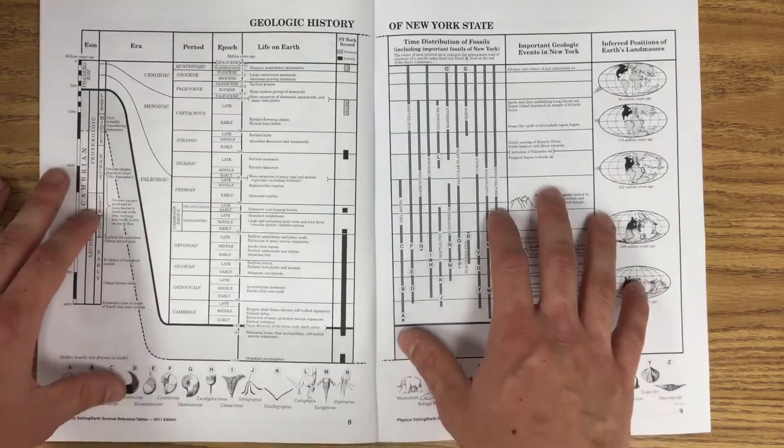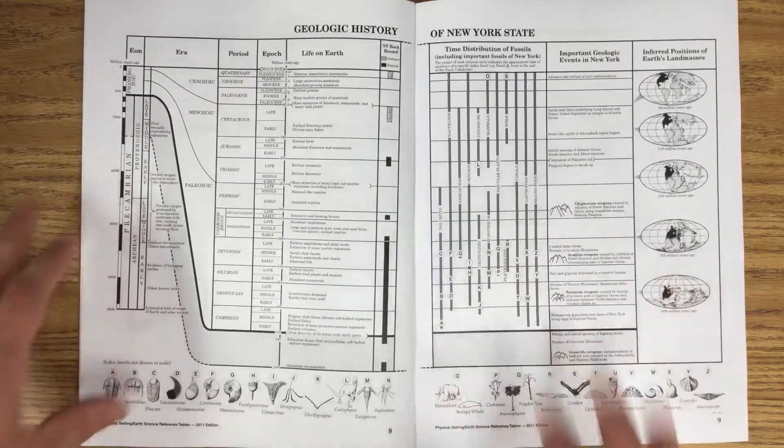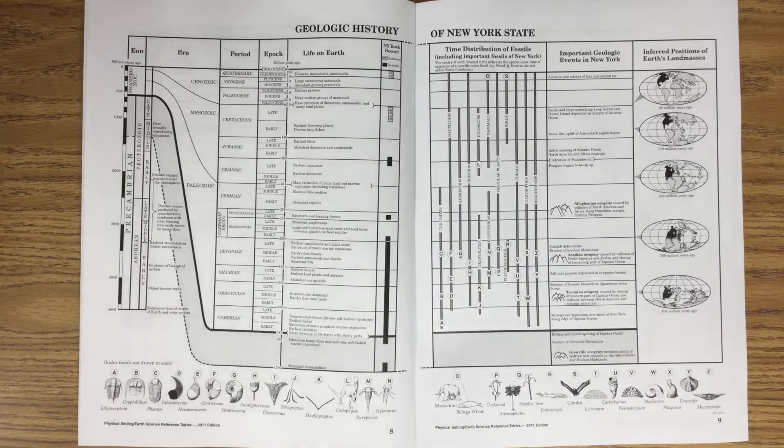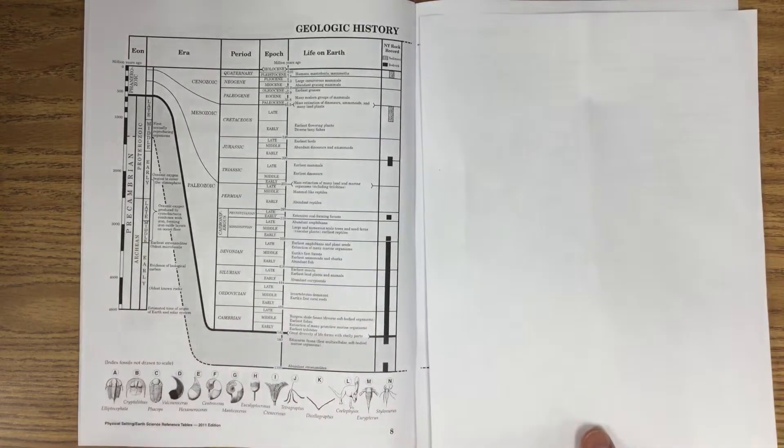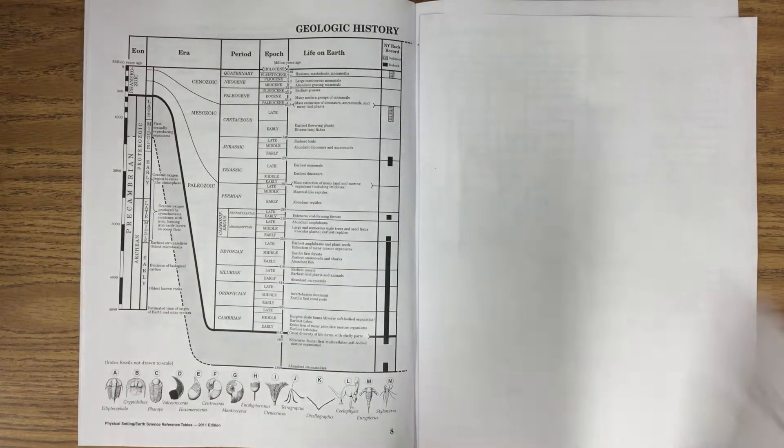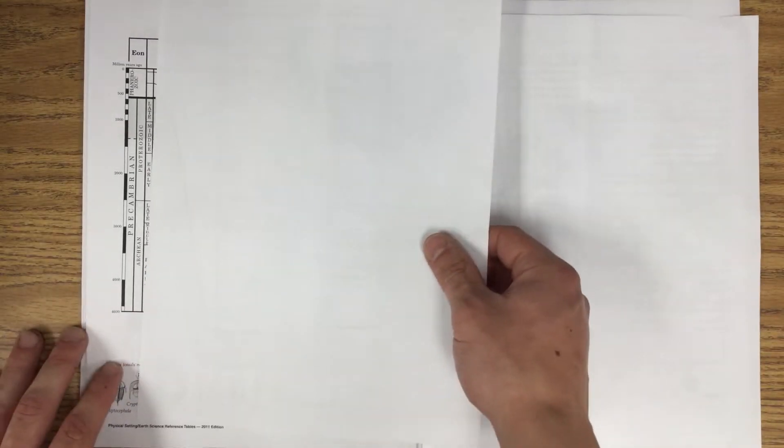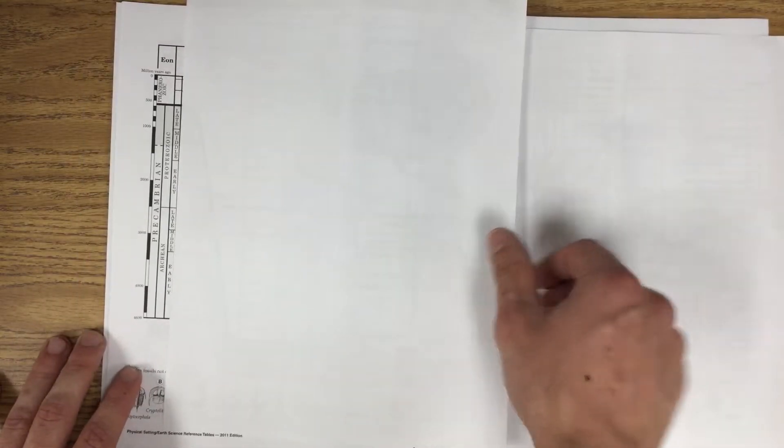But let's just focus on page 8 for now. So I am going to cover up page 9, and I'm going to cover up a majority of page 8, just so you can see this column here. Let me make sure it's focused on there. Okay, so here's the deal.